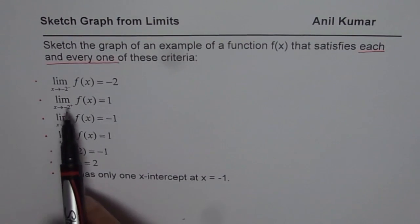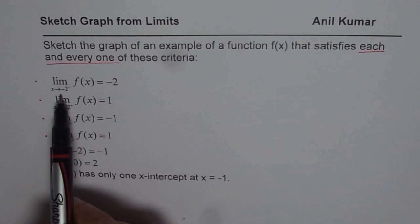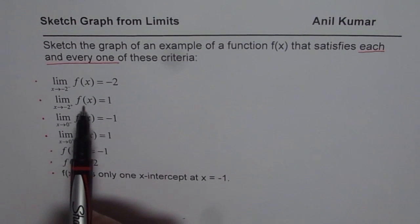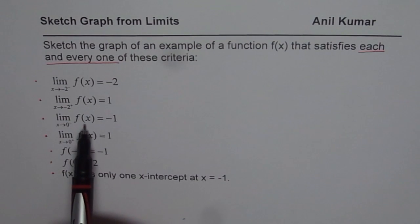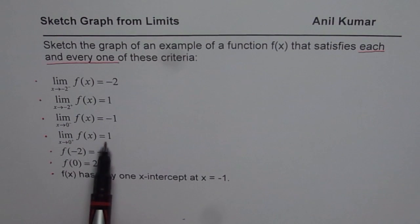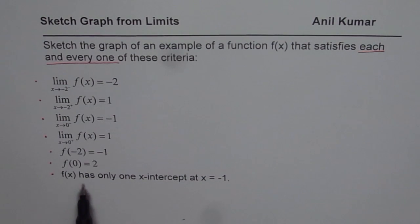The conditions are: the limit of f(x) as x approaches -2 from the left is -2; the limit of f(x) as x approaches -2 from the right is 1; the limit of f(x) as x approaches 0 from the left is -1; the limit as x approaches 0 from the right is +1. The value of the function at -2 is -1, the value at 0 is 2, and f(x) has only one x-intercept at x = -1.